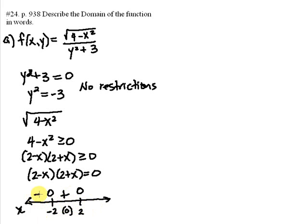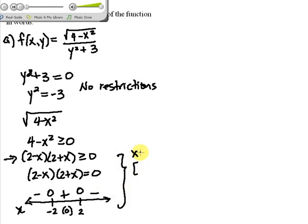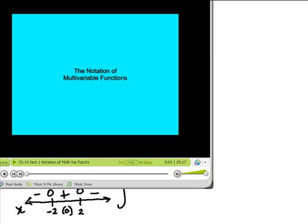So let's go back now and answer the question, or solve the inequality, 2 minus x times 2 plus x is greater than or equal to zero. Well, that's going to happen on the interval from negative 2 to 2.